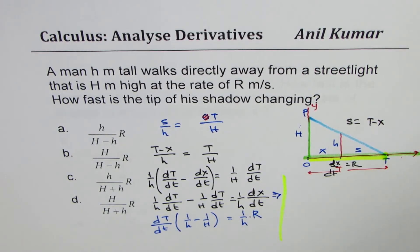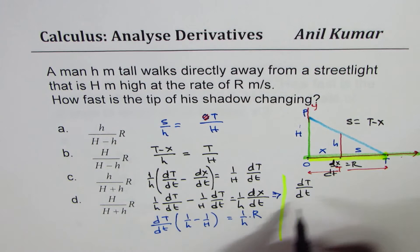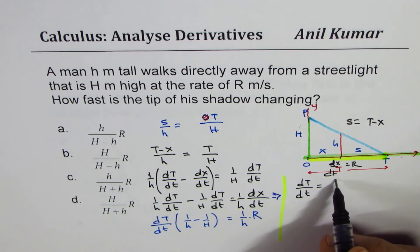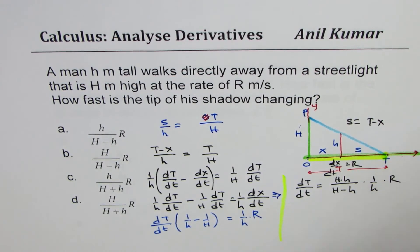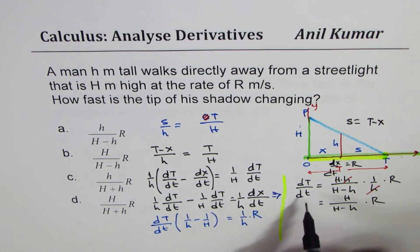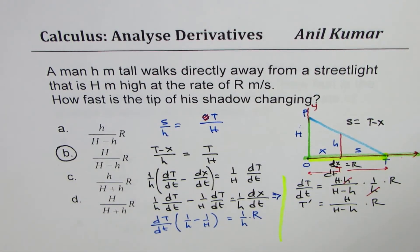Taking to the right side and rearranging: dT/dt = H/(H - h) · r. The h in the numerator cancels with simplification, and we find that the rate of change of the tip of the shadow is H/(H - h) · r. That is option B. That is how you find how fast the tip of the shadow is changing.